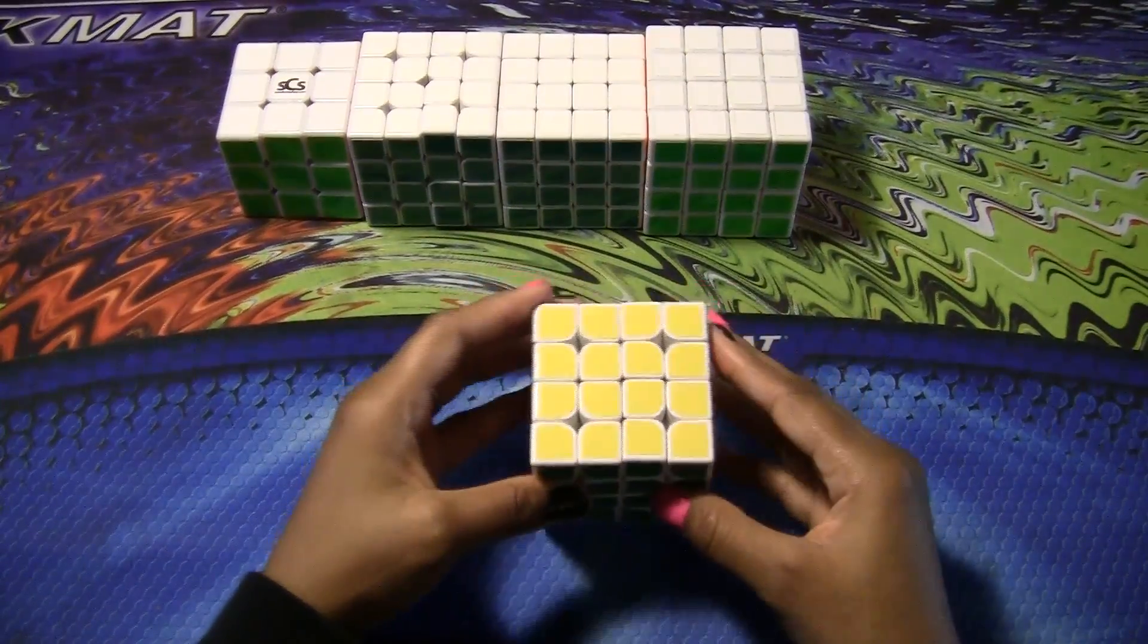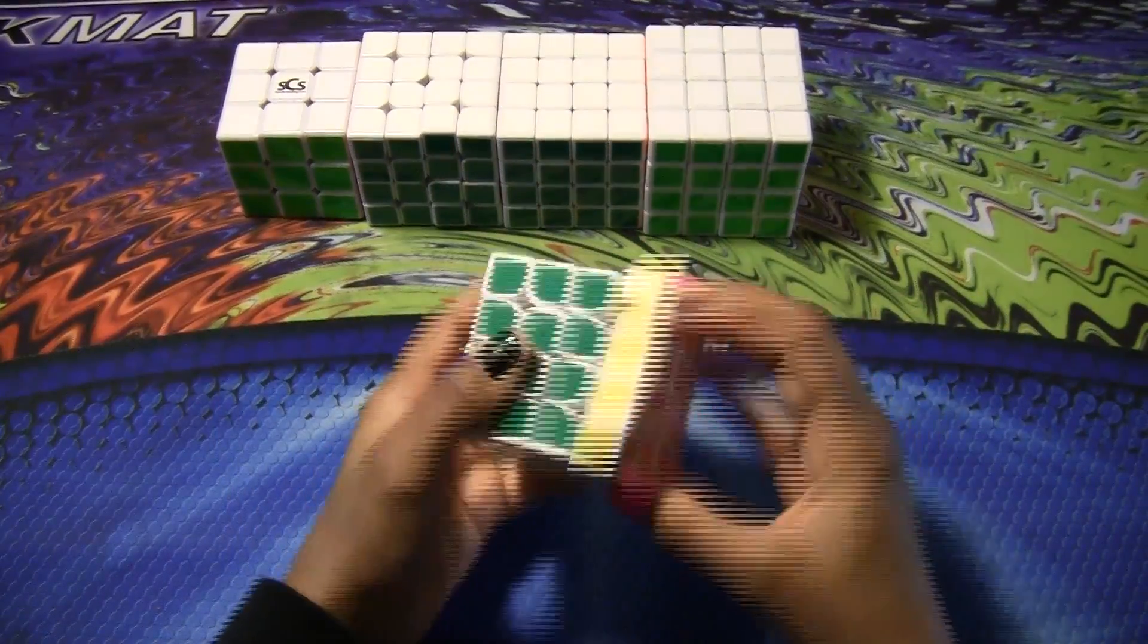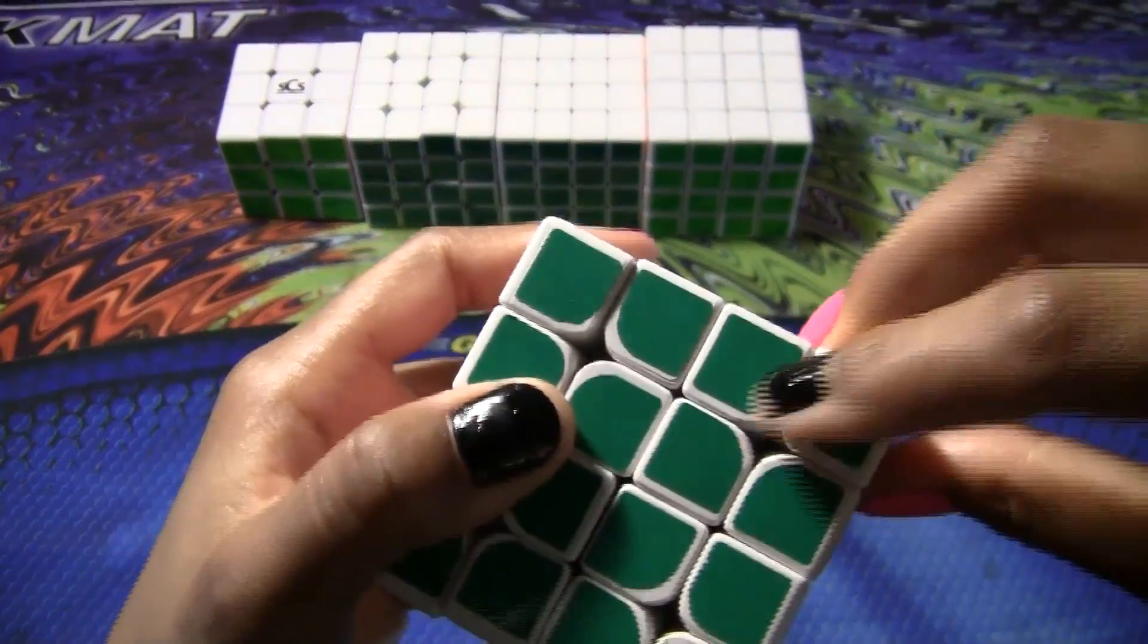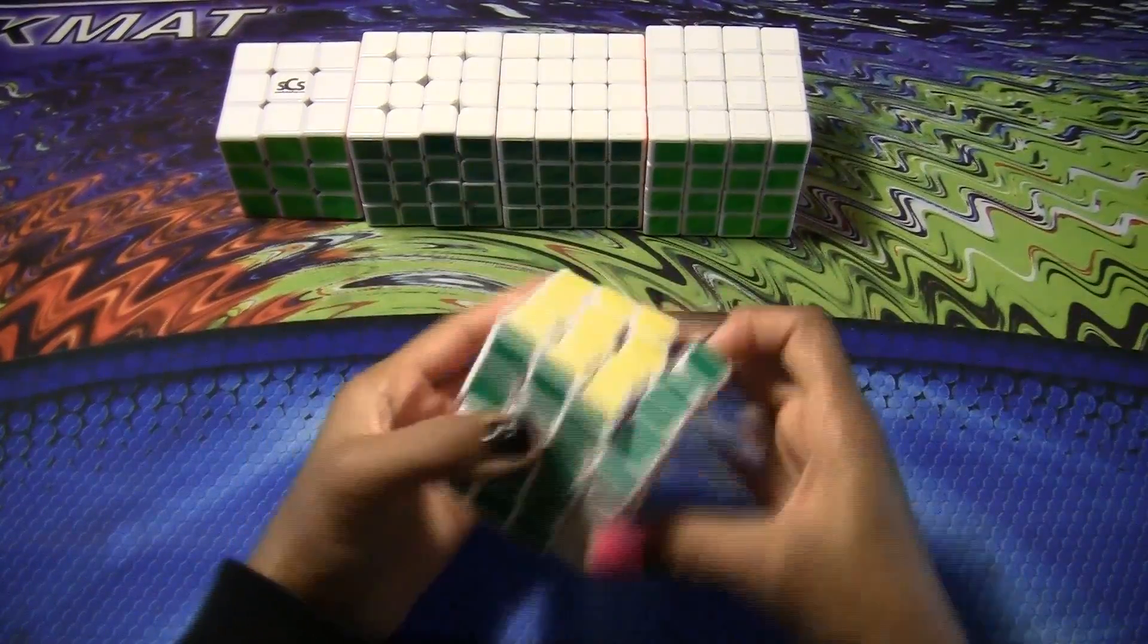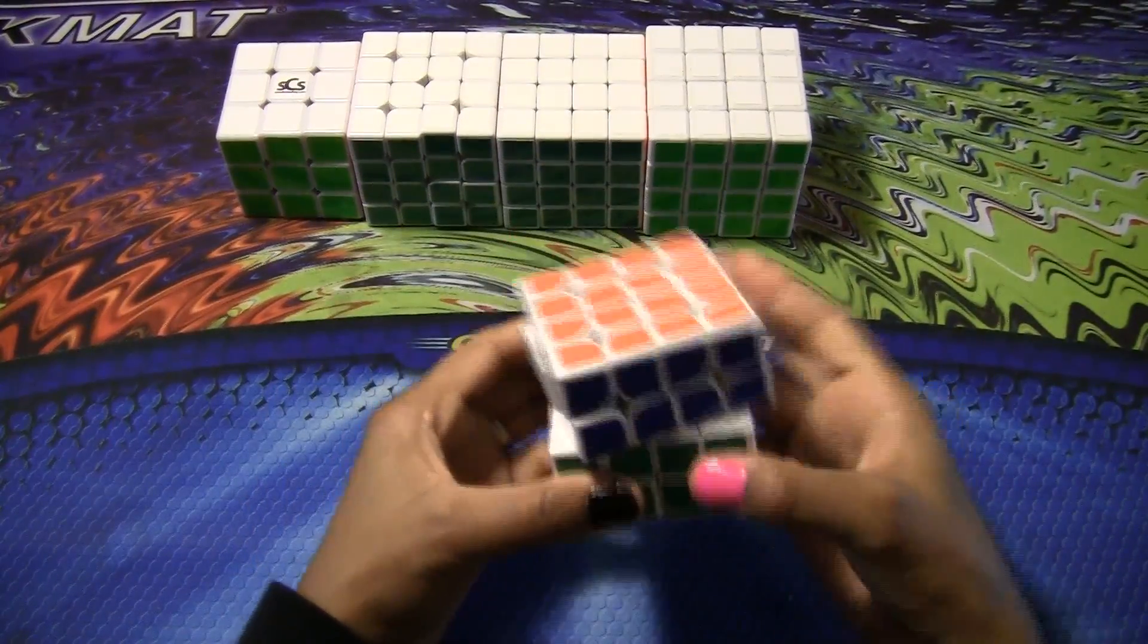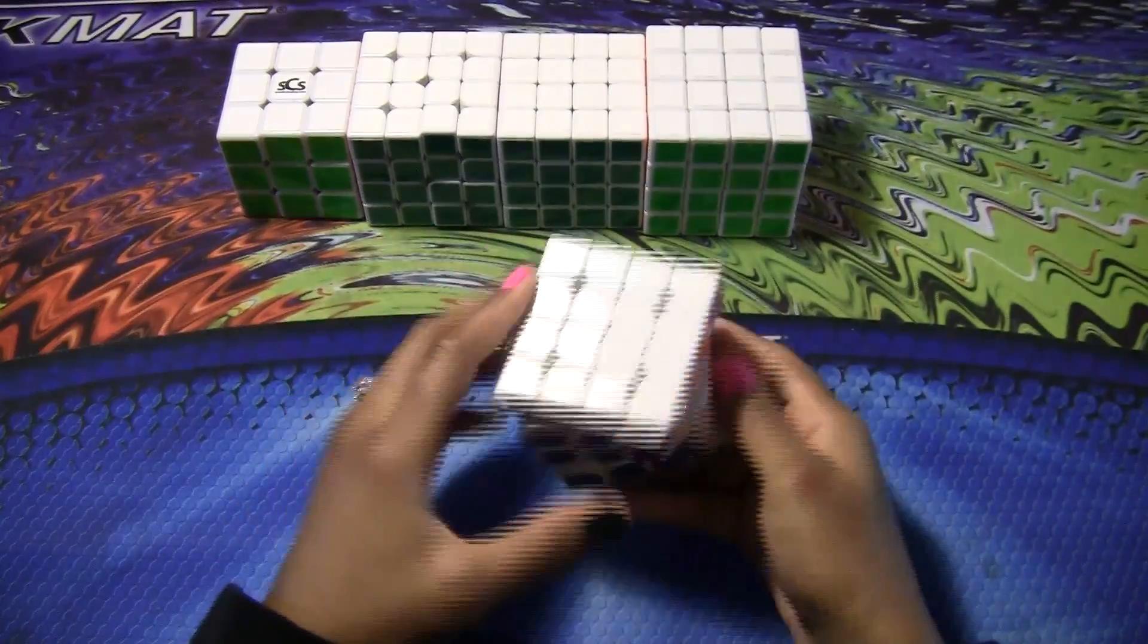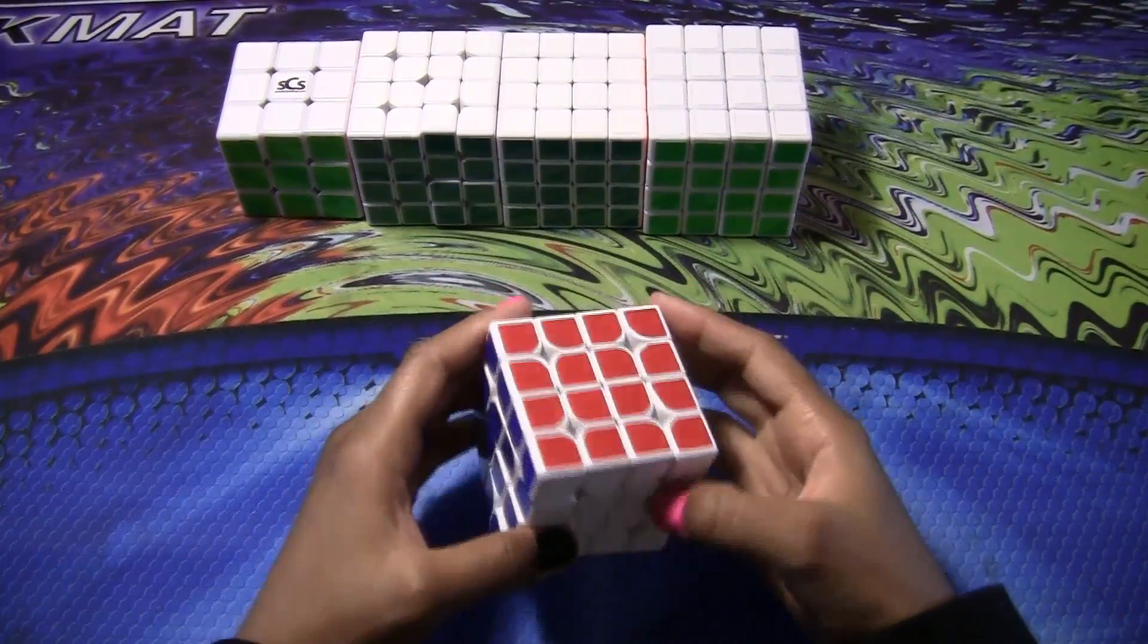And also I don't think they really reduced much of the lockups. With the corner twist, I think if TheCubicle did less sanding on the corners, maybe that would take away the corner twist. With the lockups, I have no idea how they can reduce the lockups on this puzzle. I'm not an expert on puzzle modding, but I was greatly affected at a competition with the corner twist and lockups.